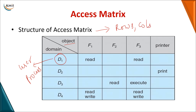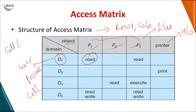Rows here are nothing but your domains, which specify a specific user or a process executed by that particular user. Columns here will be called objects — F1, F2, F3 — related to your files, or software objects as well as hardware objects. The combination of a row and column is called a cell. Cell i,j indicates that a process executing in domain one on file one will have a permission known as read. So permissions can be read, write, as well as execute.